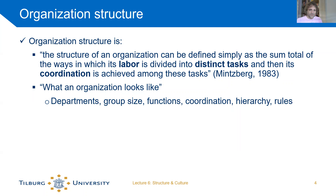If you think of a very old-fashioned, factory-based organization, everyone does his or her specific job on the factory line, and the work between people has to be coordinated. It goes from one person who does something to the next person automatically — that's how you achieve coordination. It's a very simple way of classifying an organization structure.